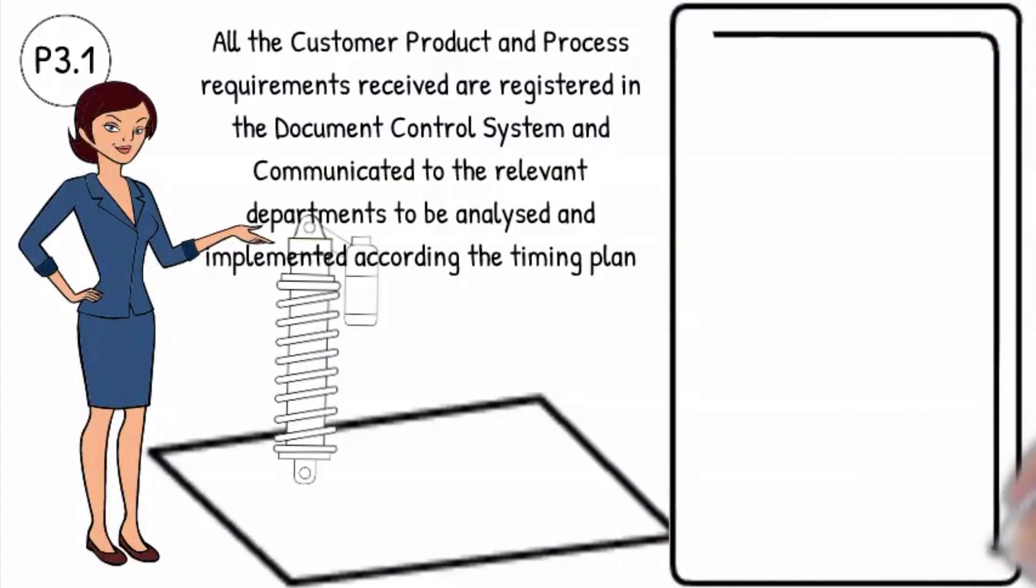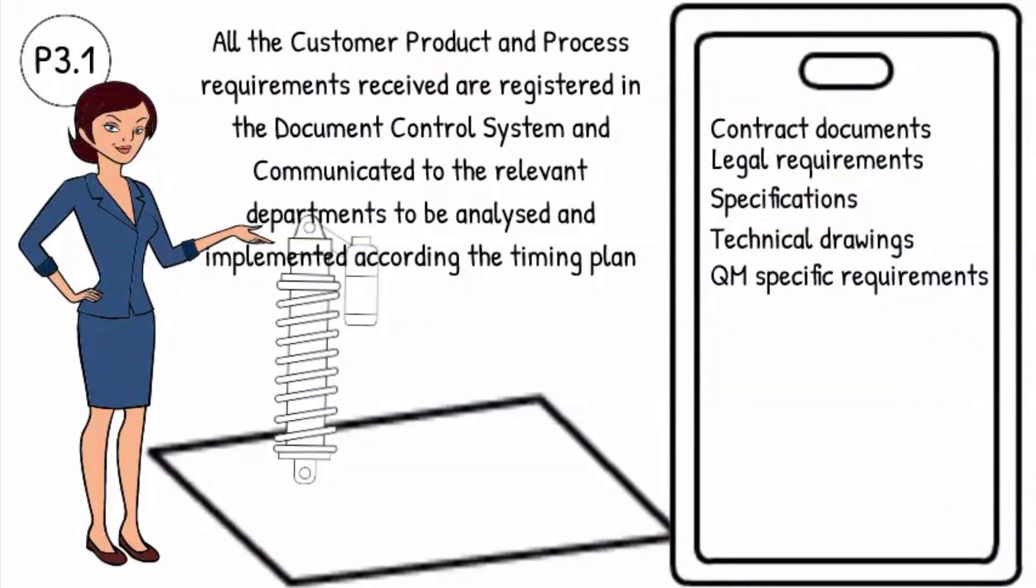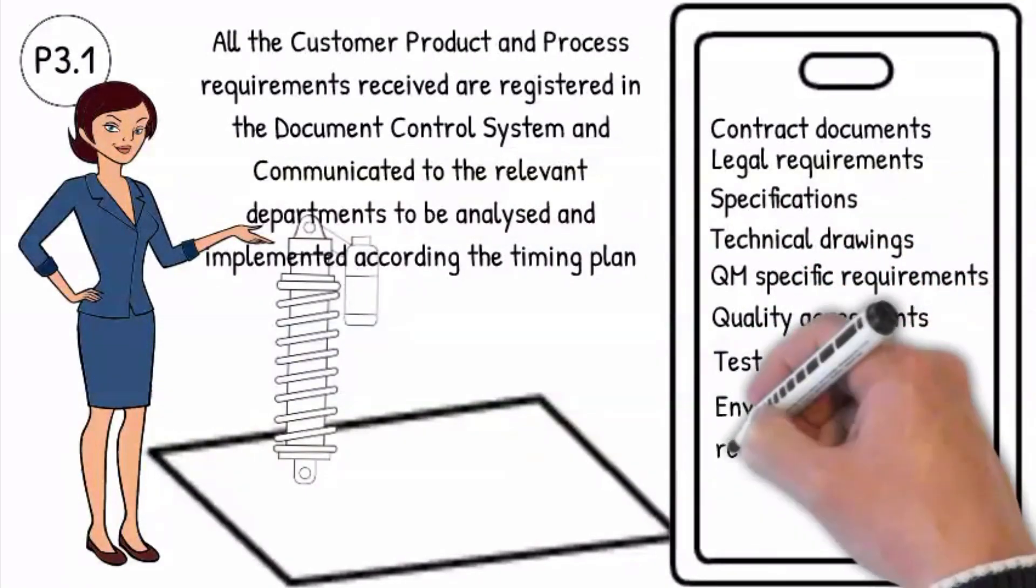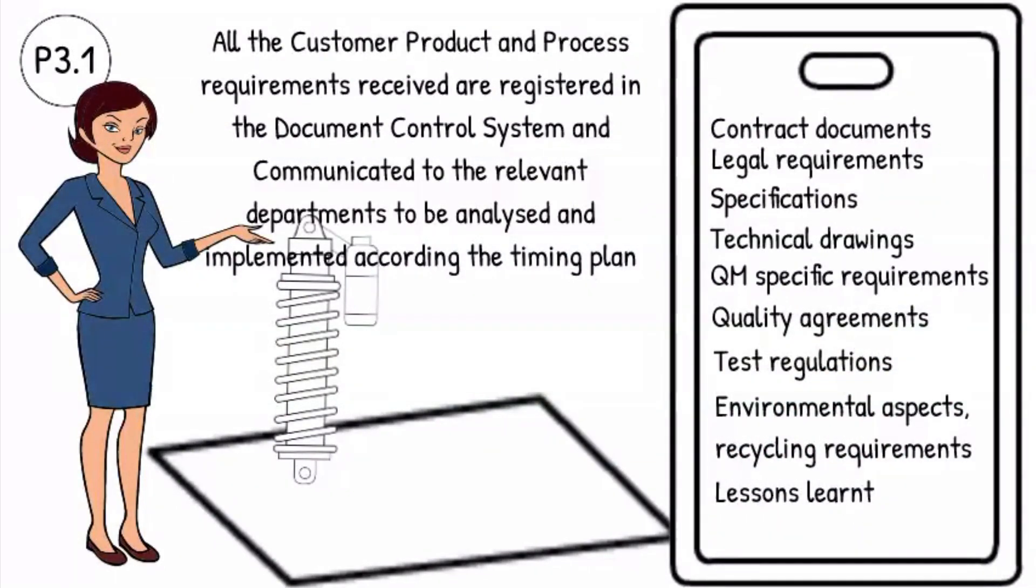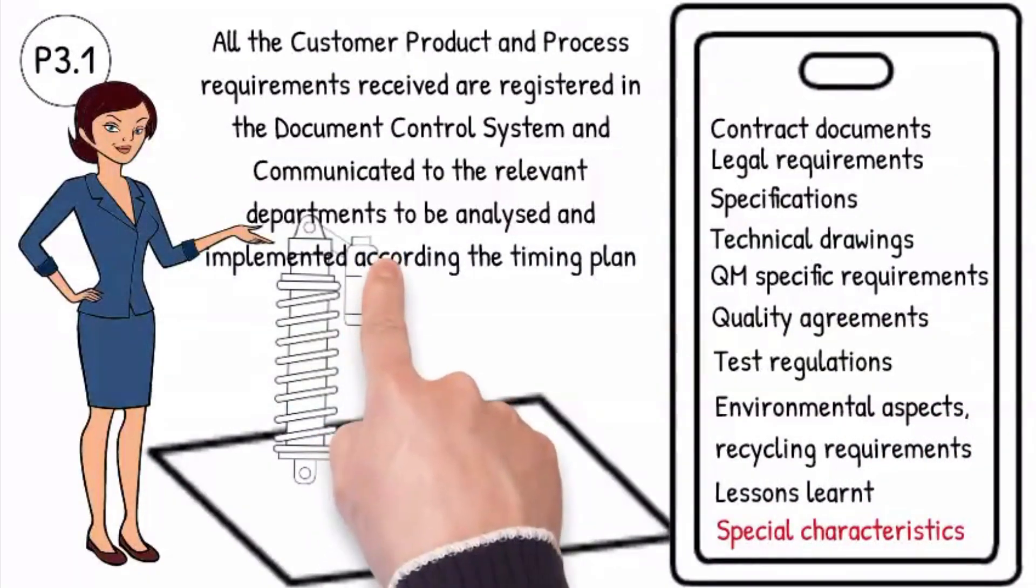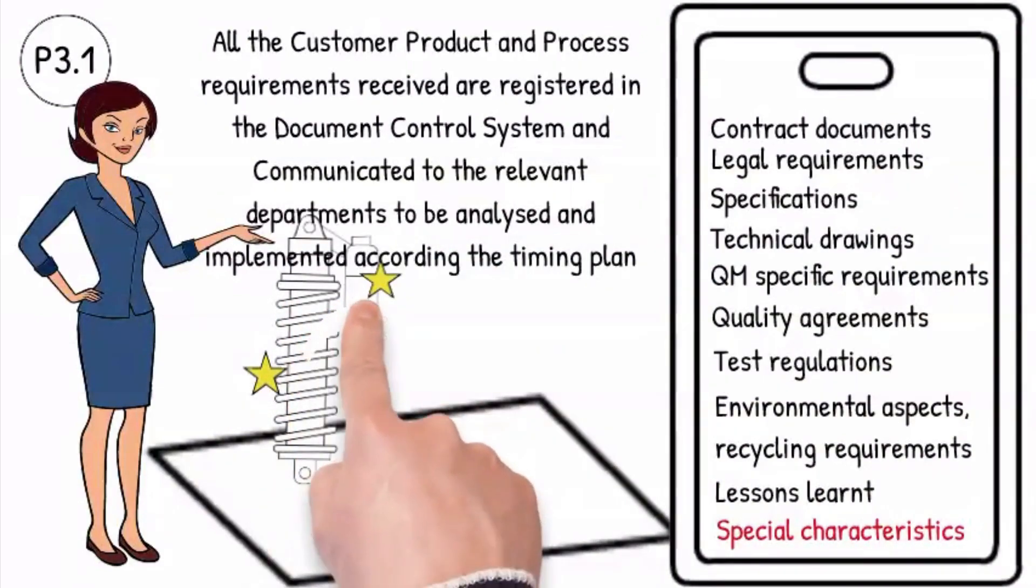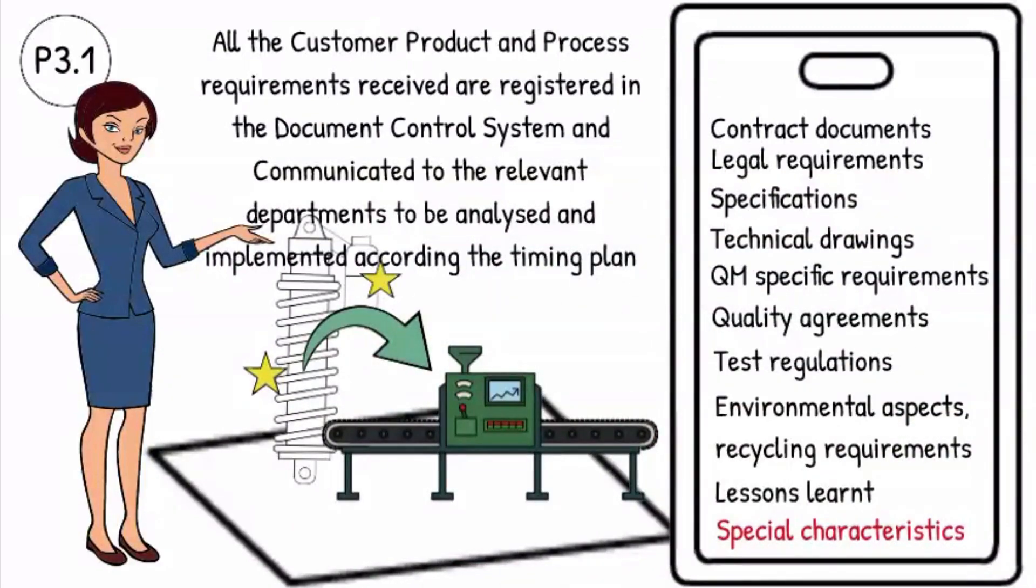And include the following: contract documents, legal requirements, specifications, technical drawings, quality specific requirements, quality agreements, test regulations, environmental aspects and recycling requirements, lessons learned from previous projects, special characteristics. The special characteristics will be identified on the basis of the customer requirements, legal requirements, manufacturing technology and characteristics that arise from the purpose and use of the product and the processes known from previous experience.